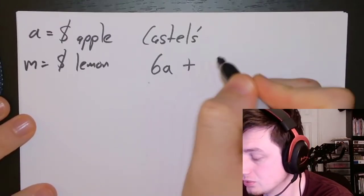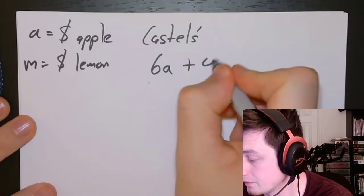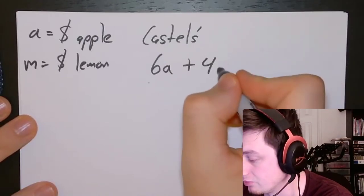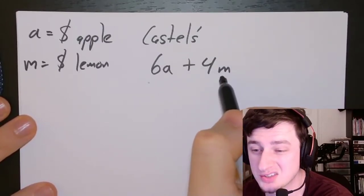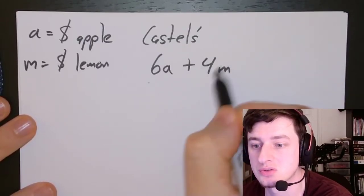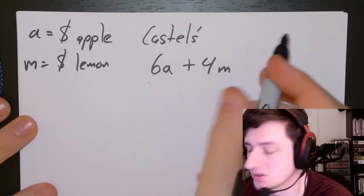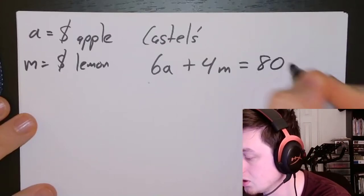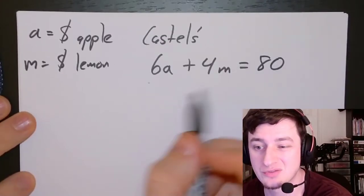So 6 times the cost is going to give us the total cost for all the apple pies he sold. We're going to add that to 4 times the lemon meringue pies, so 4M, times the cost of the meringue pies. This will give us the total cost of the meringue pies and total cost of the apple pies. We add those things together, and that totals to how much money he made, which was $80. That's our first equation.